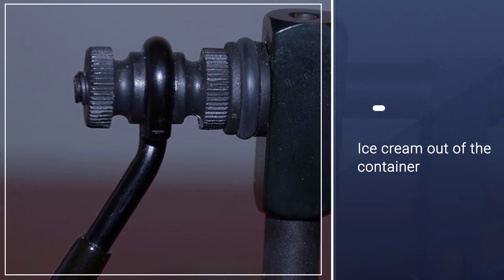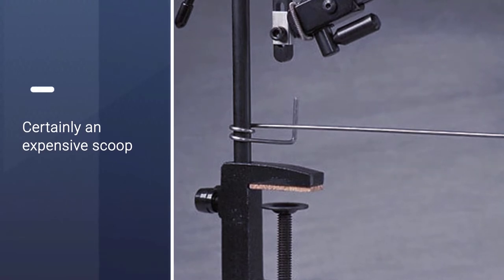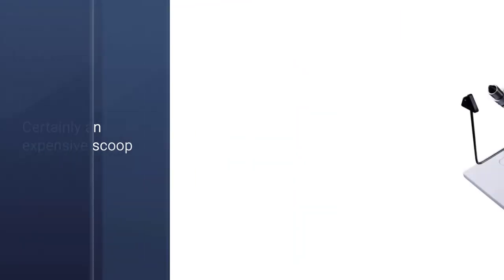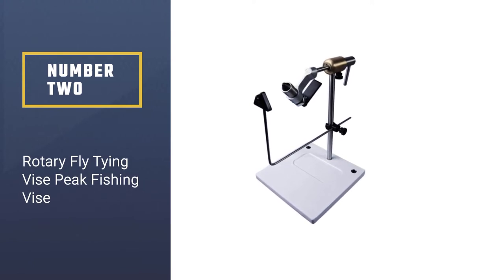The only disadvantage we found in the Griffin Odyssey Spider vice is the fact that you have to clamp it to a table. It cannot stand on its own. Number two: Rotary fly tying vice Peak Fishing vice.